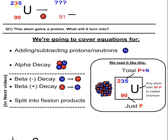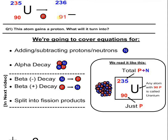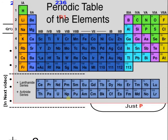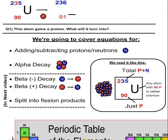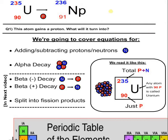And then 235 — because this is the combination of all the reds and blues — one more red will give you 236. Something weird has happened: it's gone from 90 to 91, and because it's changed the amount of protons, it's changed the element. Uranium is anything with 90 protons. So 91 protons is Neptunium. That question is done and dusted.